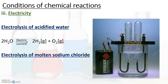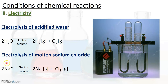The same principle applies when we pass electric current through molten sodium chloride. When electric current is passed through sodium chloride in the molten state, it dissociates sodium chloride to form sodium and chlorine gas. Sodium formed is in the solid state while chlorine is in the gaseous state. This is how electric current passed through reactants in solution or molten state gives the desired products.